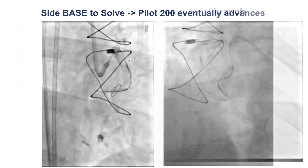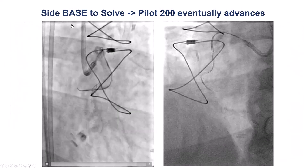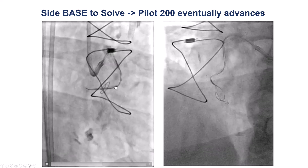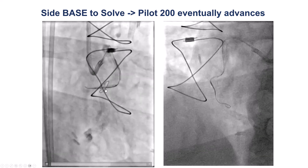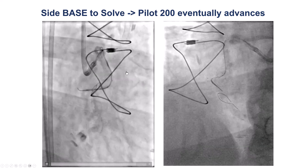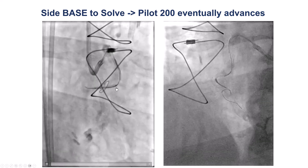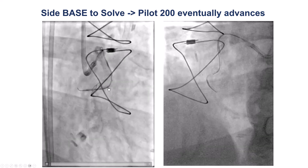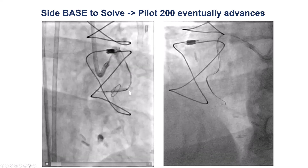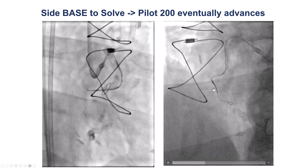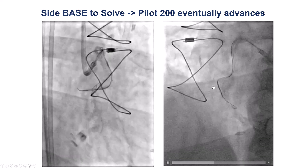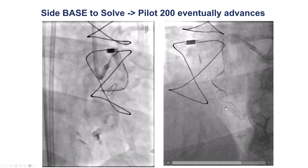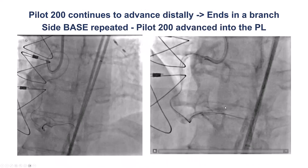So what to do next? We decided to do the side-BASE technique, which means we advanced the balloon into this atrial branch and then used another wire, a Pilot 200, that creates large knuckles. By doing that, we were able to advance the knuckle across the origin of the atrial branch, going towards the distal right coronary artery.